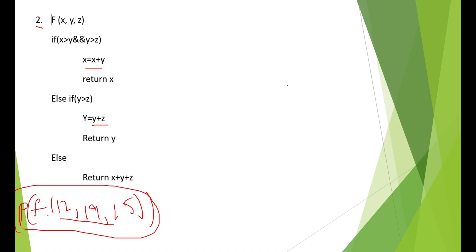They will give x, y, z as the parameters. They will say, print f of 12, 19 and 15. They will give print f of 12, 19 and 15.